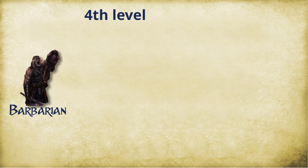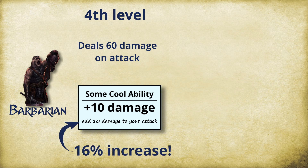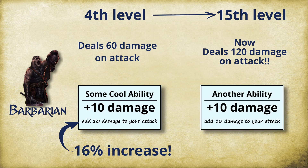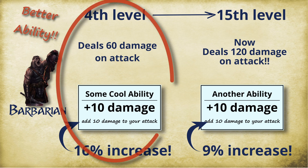Here is a simple example where it would be useful to use percent change. A fourth-level barbarian deals 60 average damage on a hit; an ability gives them plus 10 damage — that is a 16.7 percent increase. Then at 15th level they deal 120 damage on their attack — huge. They get another ability that gives them plus 10 damage again. That's nice, but it's only a 9 percent increase, so it isn't as good an ability by comparison as the one they got at fourth level.